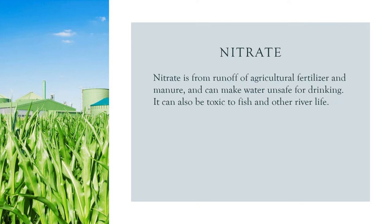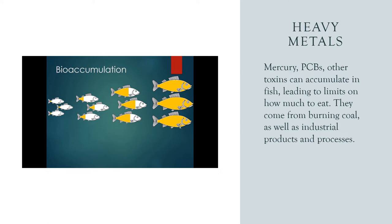Nitrate has not reached levels where it is listed as a pollutant. However, levels of nitrate are increasing within the system. As there are several cities like Fargo and Moorhead that draw at least some of their drinking water from the river, this increase is a cause for concern. Once nitrates reach unsafe levels for drinking water, the technology to remove it is very expensive. Heavy metals such as mercury, PCBs, and arsenic are found throughout the Red River in such concentrations as to require an advisory on the amount of fish from the river one should eat.